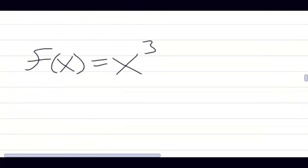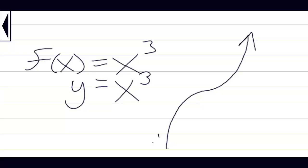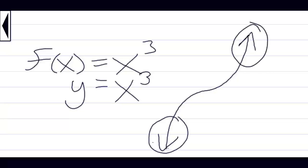Now let's look at odd functions, like y = x³. y = x³ looks like that. Here's its end behavior — it goes down on the left and up on the right. All functions that have the highest power as an odd power and the leading term positive will look like this way out on the ends.